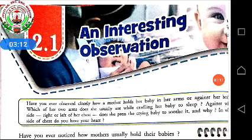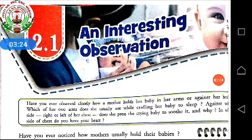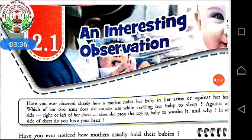Whether she holds the baby in her left arm or the right arm, and which arm she usually uses while cradling — cradling means hold gently and rock from side to side. How she presses the crying baby to soothe it — all these questions, including which side you have your heart, left or right, will be answered at the end of the chapter.